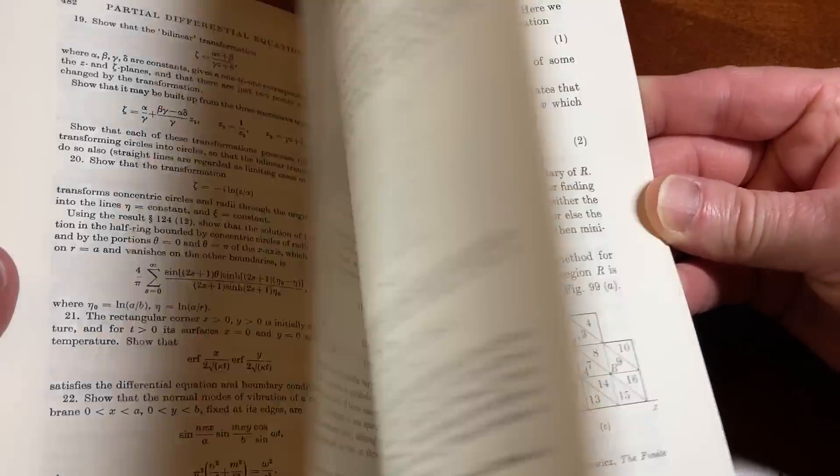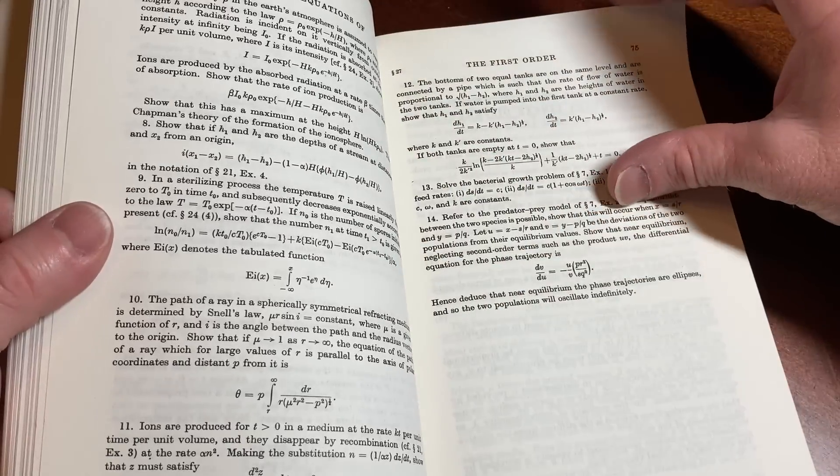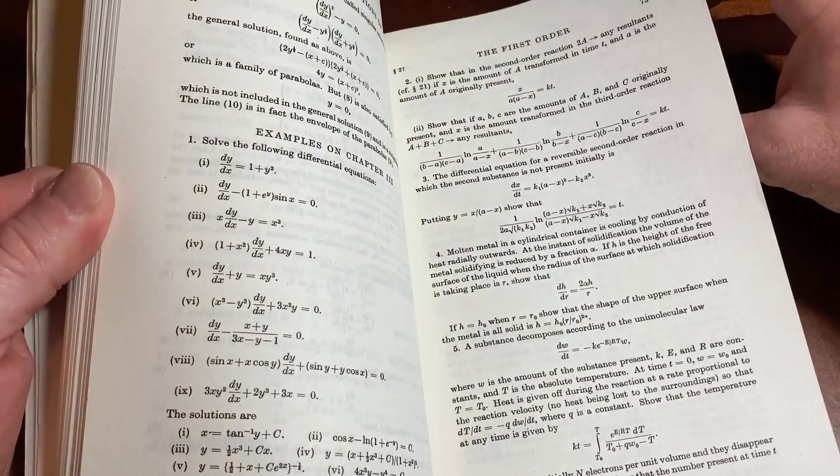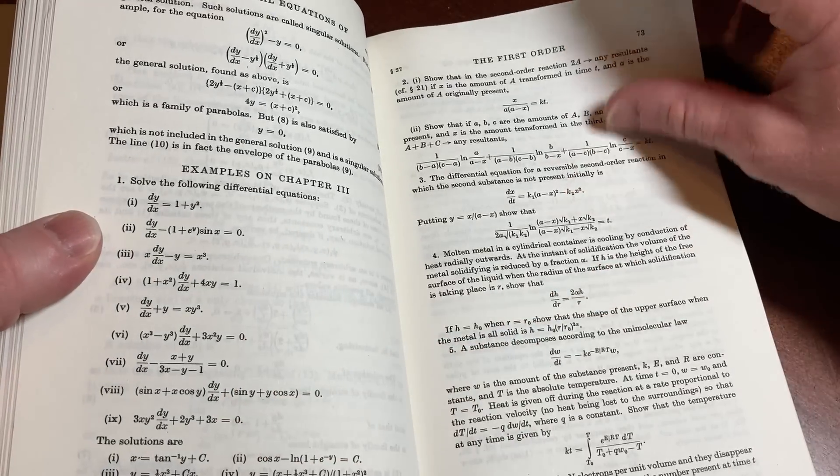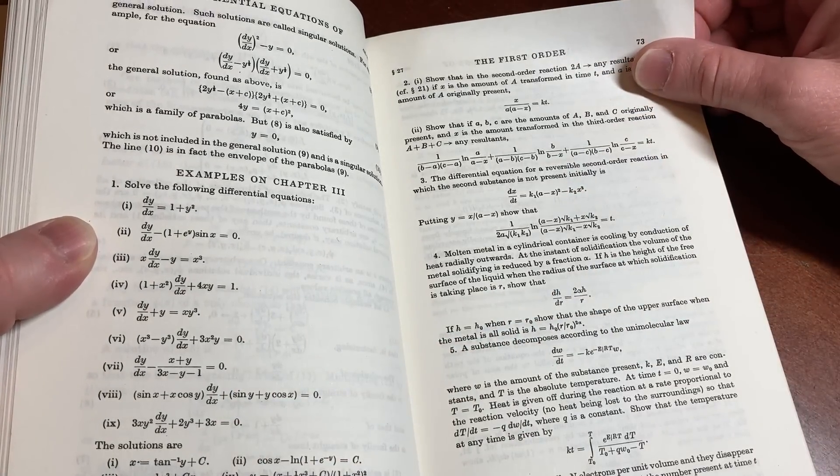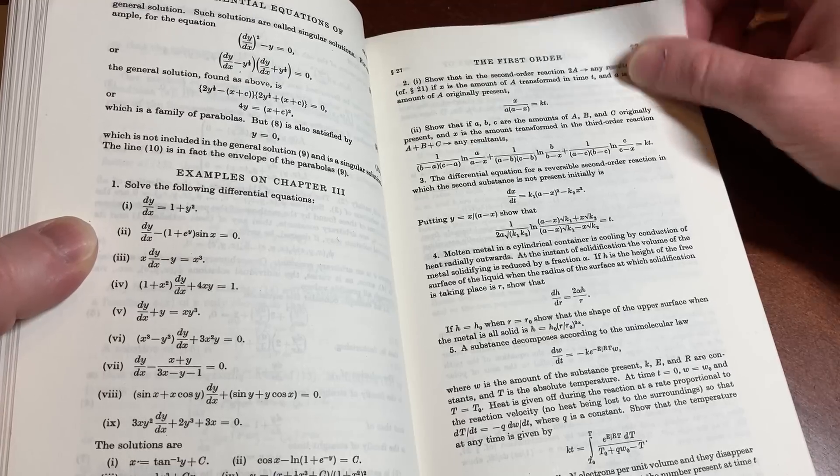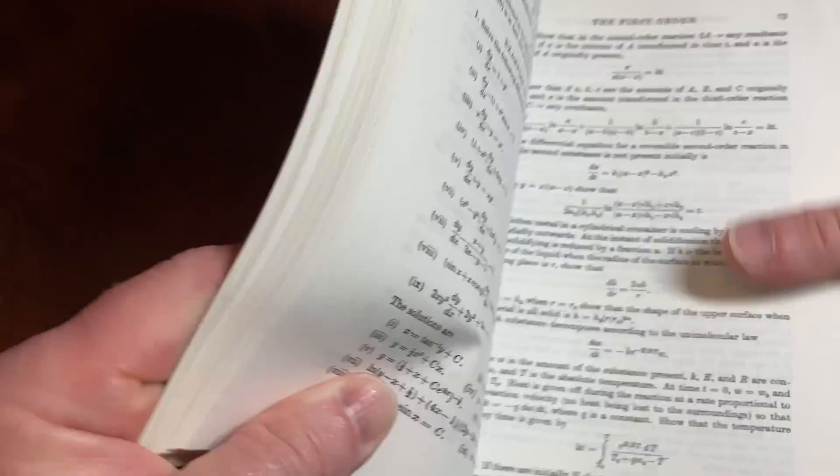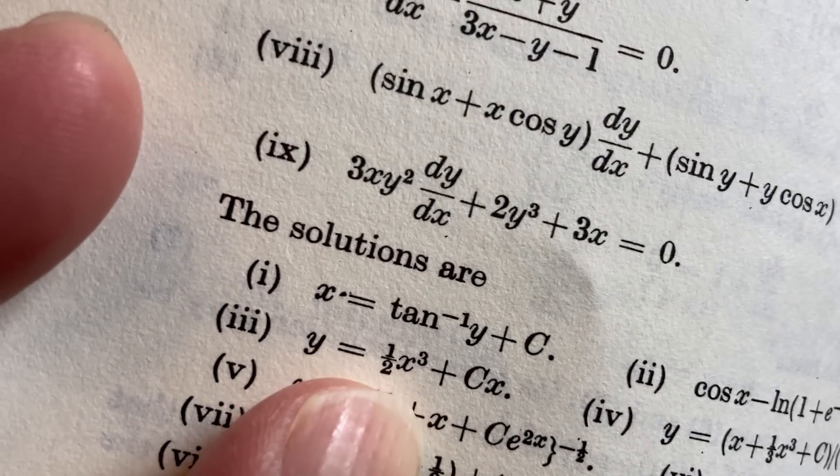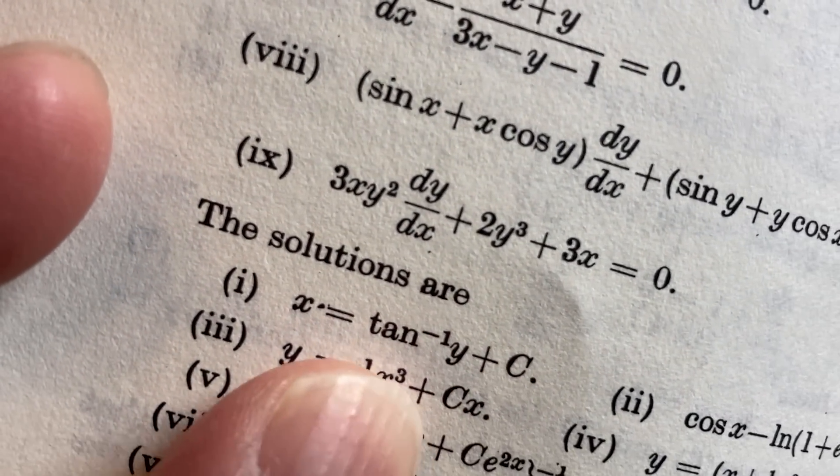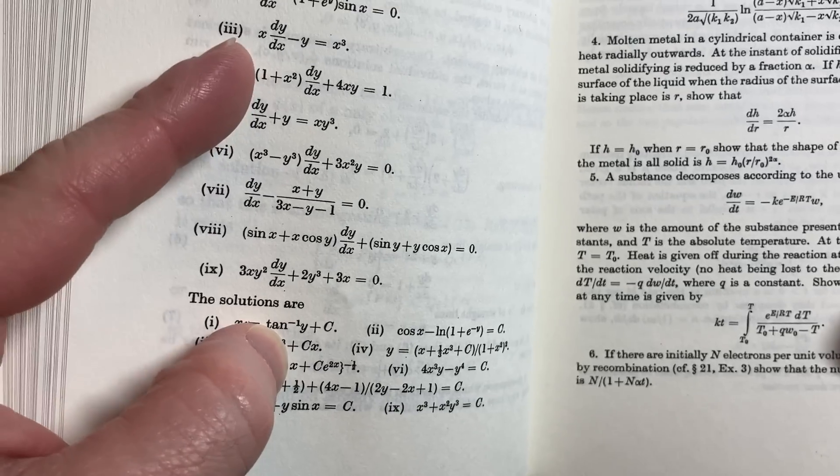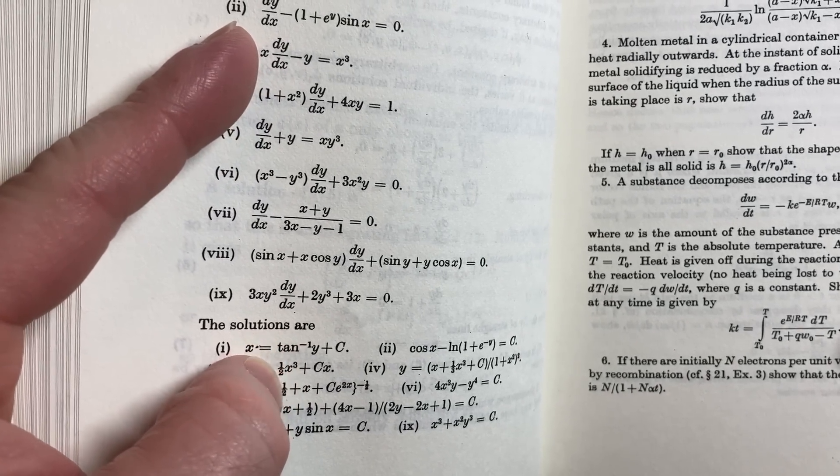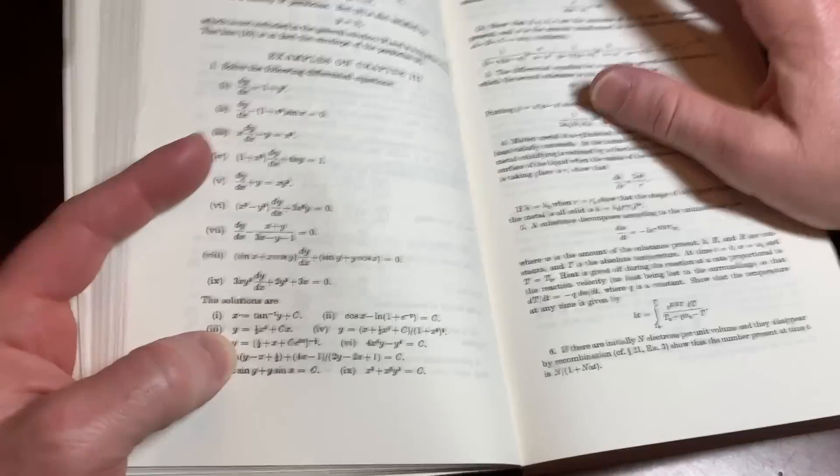But anyways, kind of a cool book. That's a big downside, right? No answers in the back of the book to the exercises. That's really, really annoying. Sometimes, let's just go back. Oh, here it is. Right here. Here's the solution. That's what I was looking for. X equals arc tan y plus c. It's right there. So that is correct, because I said tan y equals x plus c. It's the same thing.